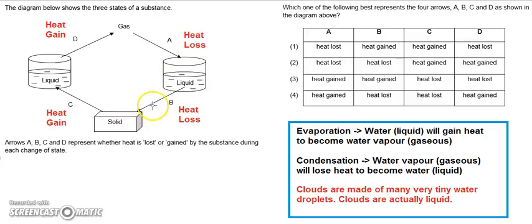So we can just think of the substance as water. Even though it states here that this substance might not be water, it's just the three states of substance. But we can just think of this substance as water. And we can just imagine whether it means heat gain or heat loss. Thank you.